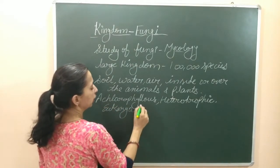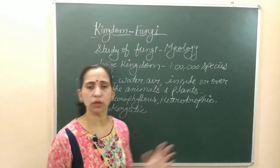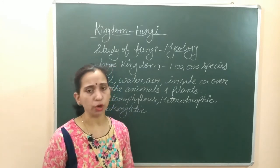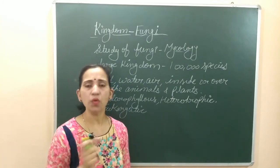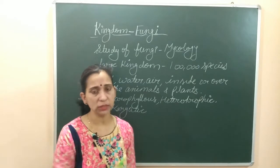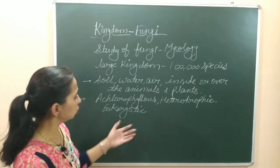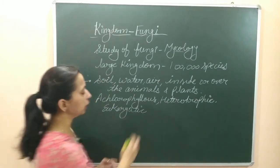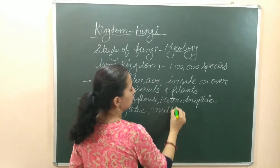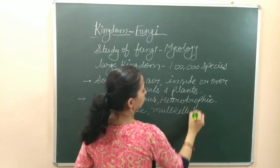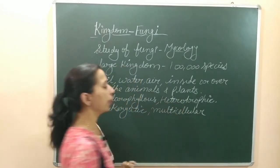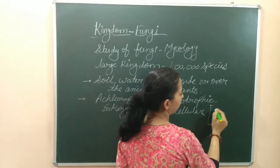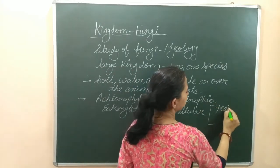Fungi are heterotrophic and they are eukaryotic organisms. This is an important point — they contain a true nucleus present with all the membrane-bound organelles. The dictyosomes formed in fungi are unicisternal dictyosomes. They are also multicellular organisms.